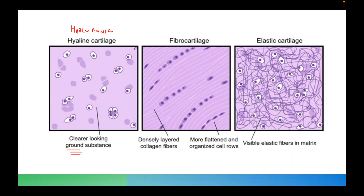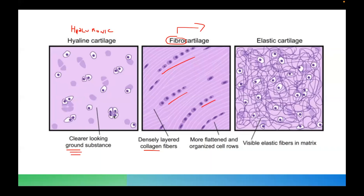For the fibrocartilage, they are comprised of dense layered collagen fibers, which are more flattened and more organized than other types of cartilage. As you can see here, densely layered collagen fibers are arranged in organized cell rows. Two locations in the body where you encounter fibrocartilage are the symphysis pubis and the intervertebral disc.